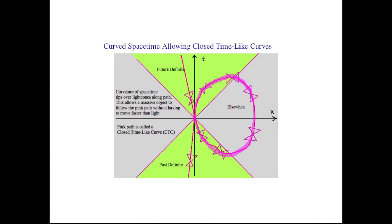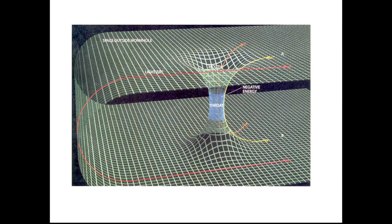And it can be done in time-like fashion, as shown here, such that the observer is always moving locally into his or her future, while globally could be moving towards everyone else's past. One way to do that is by using what's called a wormhole, which connects two regions of the space-time manifold which are otherwise far apart, in a relatively close fashion.